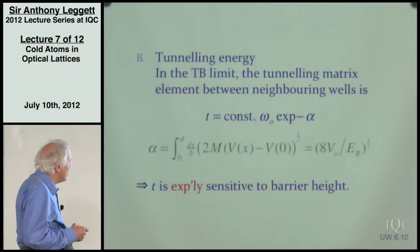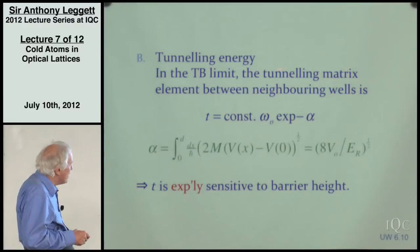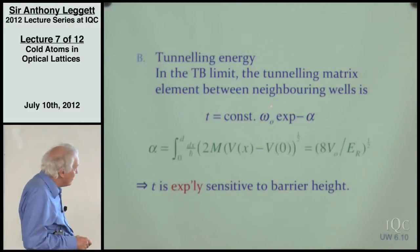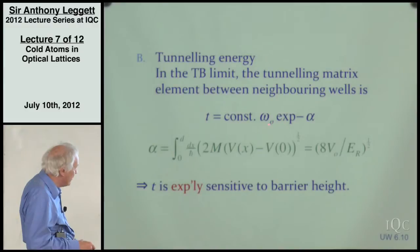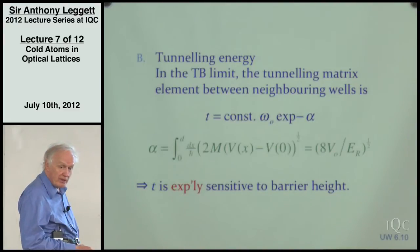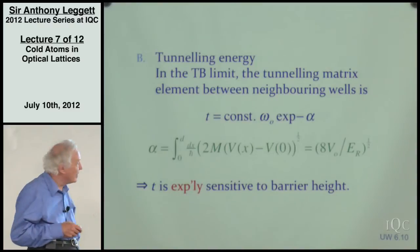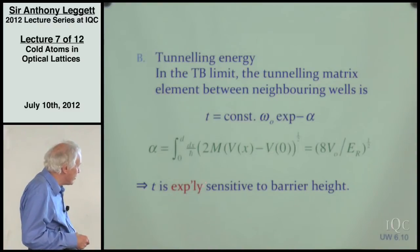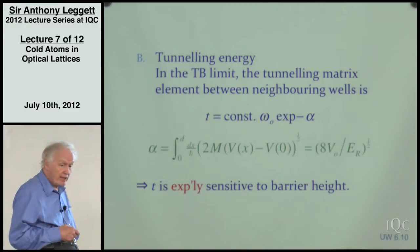The next energy to consider after zero-point energy is the tunneling energy. In the tight binding limit, the tunneling matrix element between neighboring potential wells has a standard WKB-type expression: an attempt frequency—roughly the zero-point vibration frequency—multiplied by the WKB factor exp(−alpha), where alpha is given by V₀ divided by E_R. This tunneling matrix element is exponentially sensitive to the barrier height, so by making a relatively small adjustment in barrier height, you can change it by an order of magnitude.